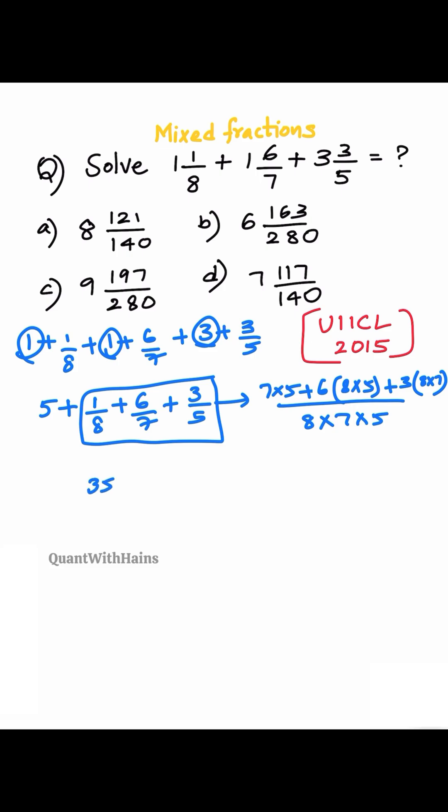35 plus 40 into 6, 240 plus 56 into 3. 168 by 7, 8 is 56 into 5, 280.